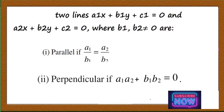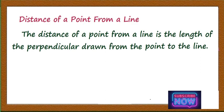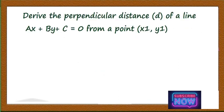Now let us derive one important result: the distance of a point from a line. We have to find the distance of a point from a line, that is the length of the perpendicular drawn from the point to the line. We will derive the perpendicular distance d of the line ax + by + c = 0 from a point (x1, y1).